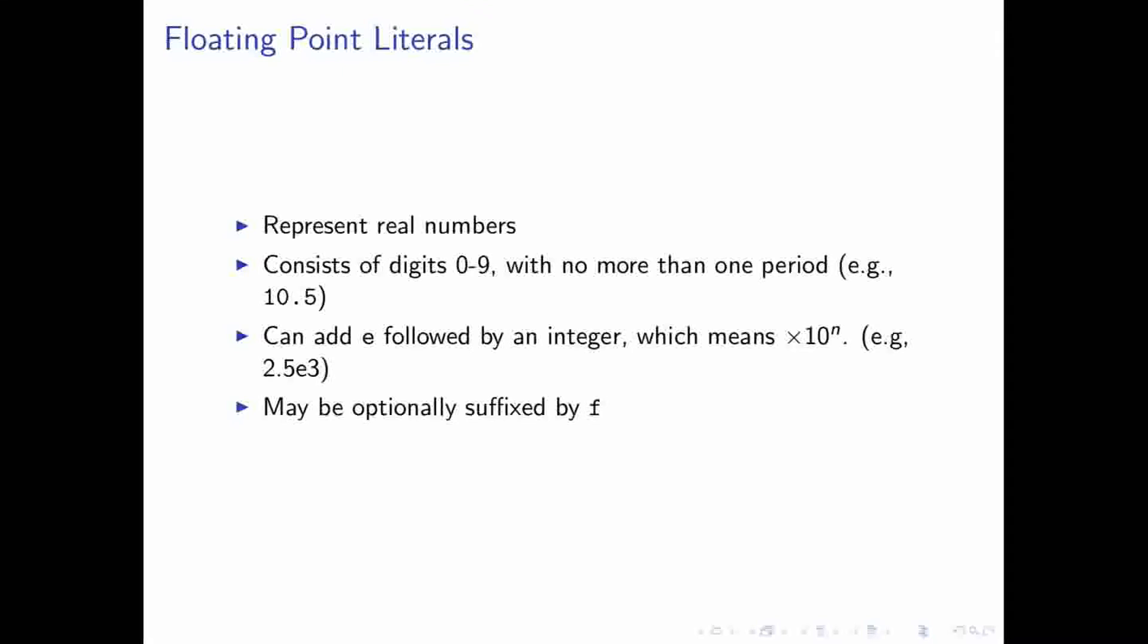So for instance, 10.5 is an example of a floating-point literal. And then if you need something similar to a form of scientific notation, then what you do is you add an E to the end, and the power of 10 that you want. So 2.5E3, for instance, is 2.5 times 10 to the third power. And you can also optionally suffix this by F.